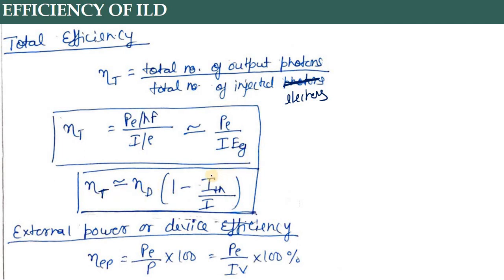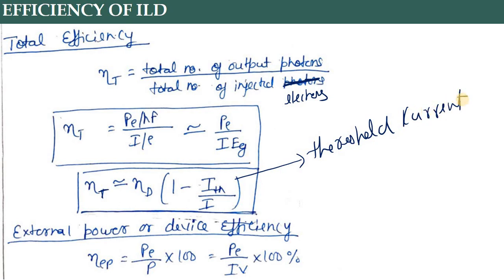Total efficiency की relation differential efficiency के form में भी निकाल सकते हैं: ηtotal = ηd × (1 - Ith/I), जहाँ Ith threshold current है। Threshold current इतना तो देना ही पड़ेगा for injecting the carriers। Last efficiency term है external power or device efficiency: कितना power apply कर रहे हो और कितना optical output मिल रहा है - output optical power divided by input power applied to the device।